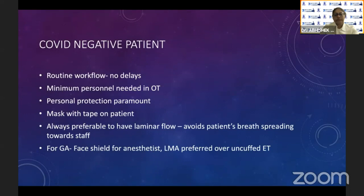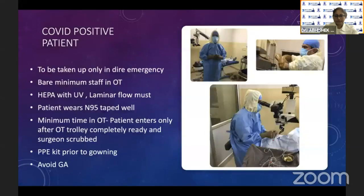Patient movement should be streamlined with no unnecessary delays. If the patient is COVID-negative, a proper workflow with no delays must be ensured. Minimum personnel should be present in the OT, and personal protection must be used. The patient's mask should be taped, and a laminar flow setup is preferable. For GA, a face shield should be used by the anesthetist, and laryngeal mask airway is preferred over uncuffed endotracheal tube intubation.